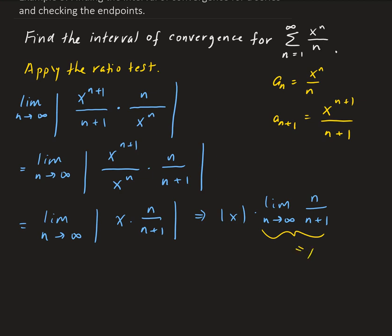So the limit here goes to 1. For this series to converge, we want to find which x values make it converge. We need to solve for the absolute value of x less than 1, because that is the criteria for convergence using the ratio test.